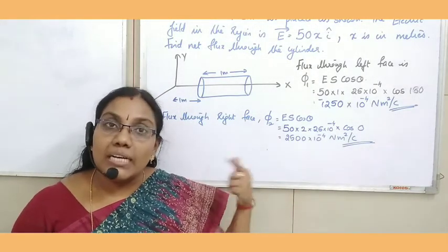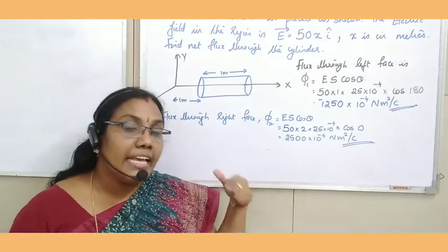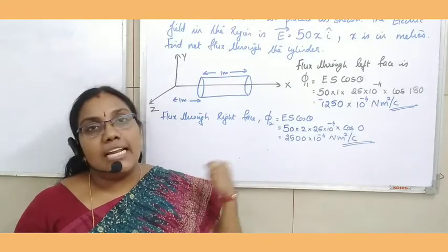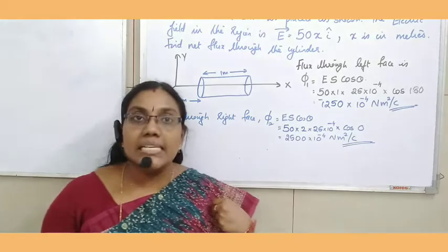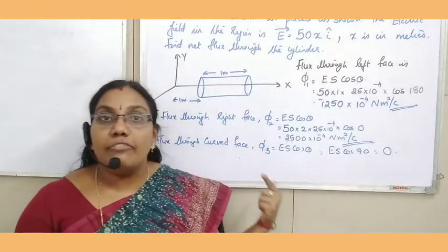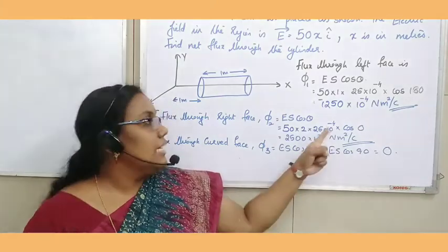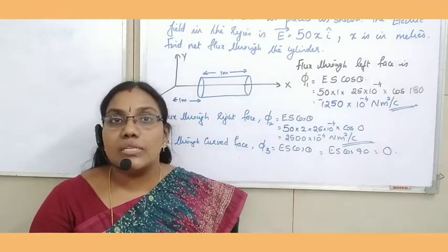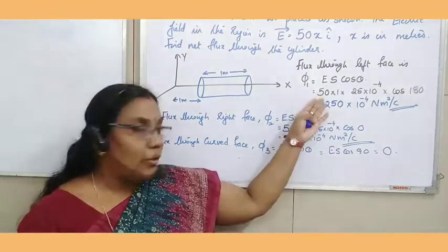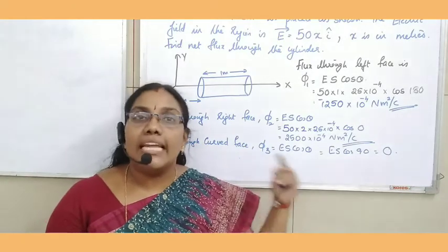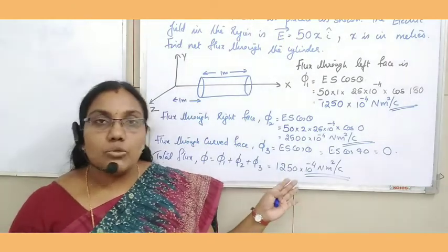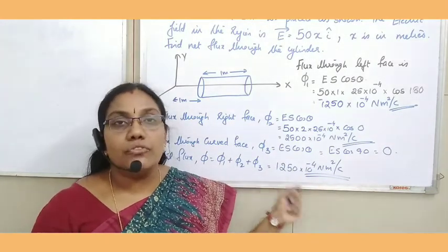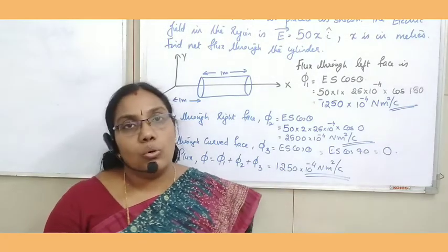Electric flux through the curved region: electric field and area vector are perpendicular to each other, so theta = 90°, and electric flux through the curved region is zero. Total electric flux is φ₁ + φ₂ + φ₃. After simplification, the total electric flux through the cylinder is 1250 × 10⁻⁴ N·m²/C.